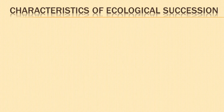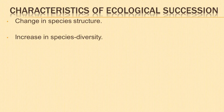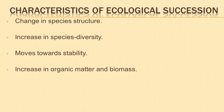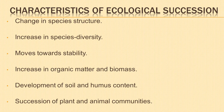Let us learn about the characteristics of ecological succession. It is a systematic process which involves change in species structure. It leads to an increase in species diversity. It moves towards a state of stability. It leads to an increase in organic matter and biomass. It also helps in the development of soil and its humus content. Succession of plant and animal communities occurs due to change in physical environment and population of species.